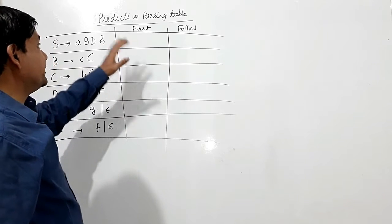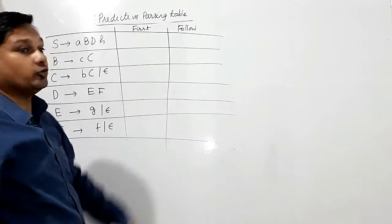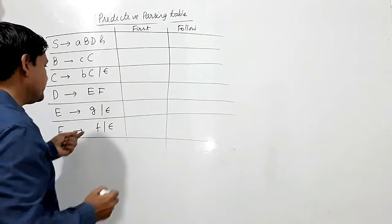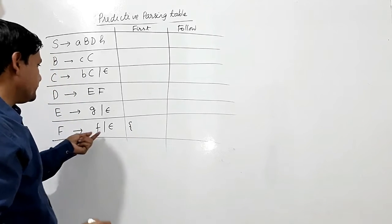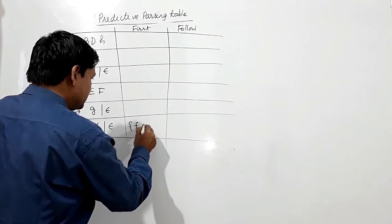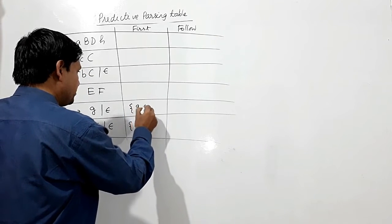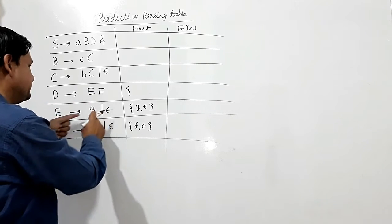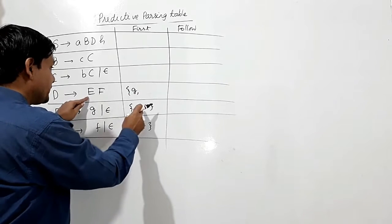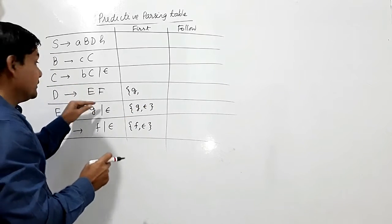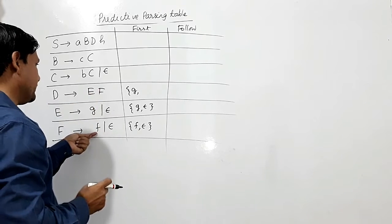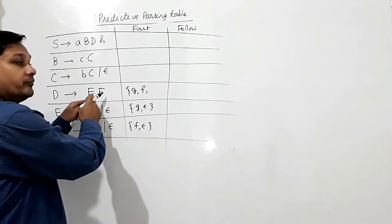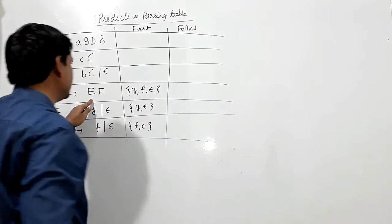Before constructing the predictive parsing table, we shall find the FIRST and FOLLOW sets of these non-terminals. For F, FIRST(F) is {F, Epsilon}. For E, FIRST(E) is {G, Epsilon}. For D, it depends on E and F — FIRST(D) starts with G from E. If G is replaced by Epsilon, then FIRST(F) gives F, and if F is also Epsilon, we include Epsilon.